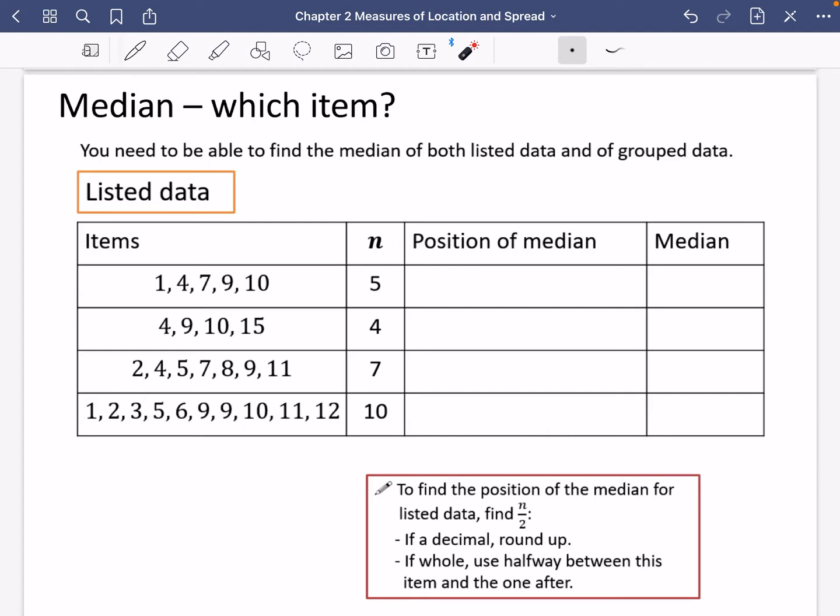Okay, we move away from the mean and start thinking about the median. I'm not actually finding the median really, but we're wanting to decide which item in a list is going to be the median. Obviously, all the data is always going to be organized from smallest to biggest. That should always be the case, but do check that it is. And I've said here, you need to be able to find the median of both listed data and of grouped data.